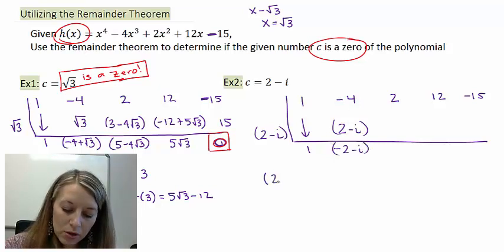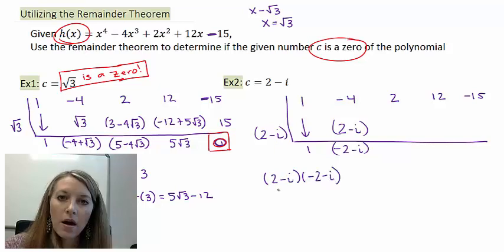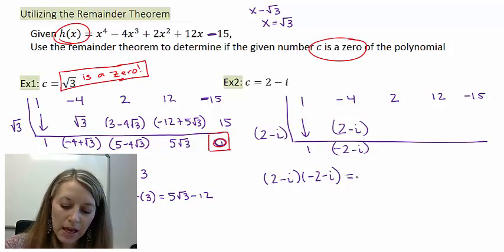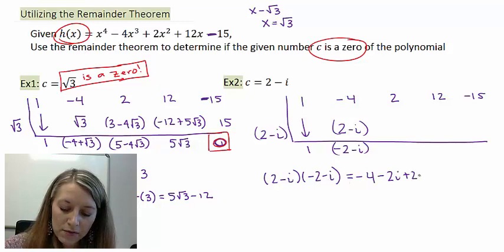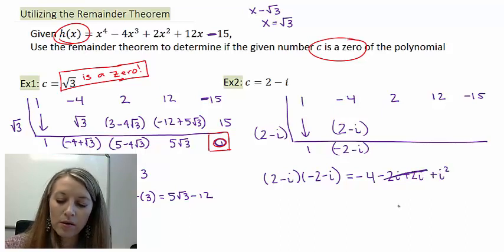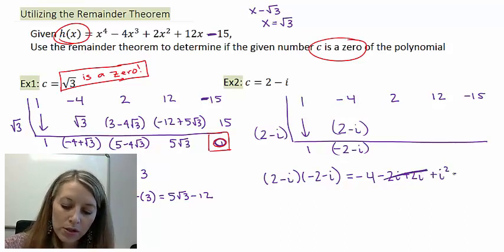Now I multiply them, (2 - i) times (-2 - i). I'm multiplying two binomials here, or a 2 by 2, so I have to FOIL this out. First, 2 times -2 gives me -4. Outside gives me -2i. Inside gives me positive 2i, so those cancel out. And -i times -i gives me a positive i². We know that i² turns into -1, so this is -4 - 1, or -5.